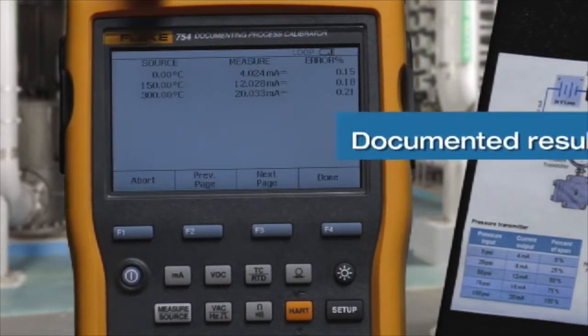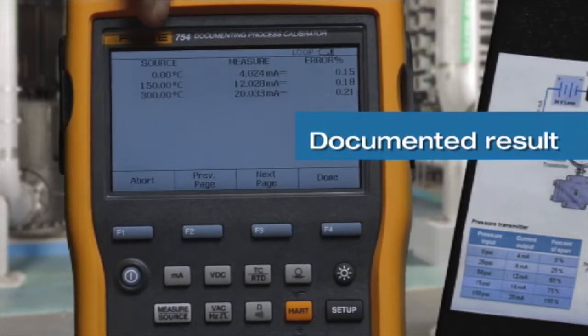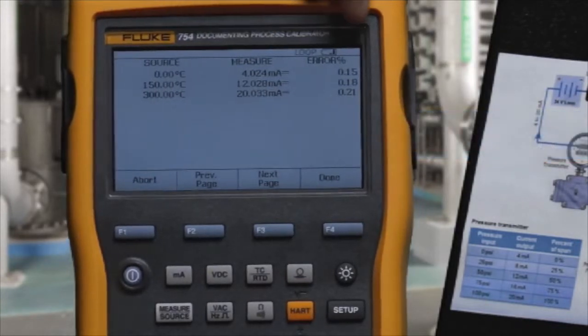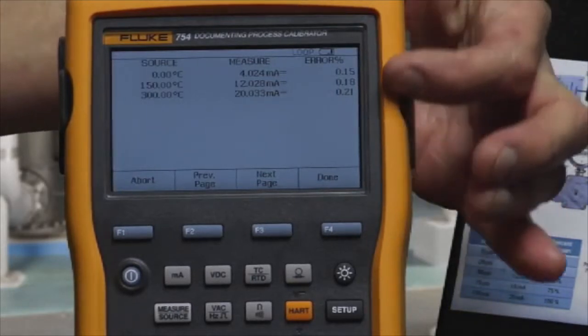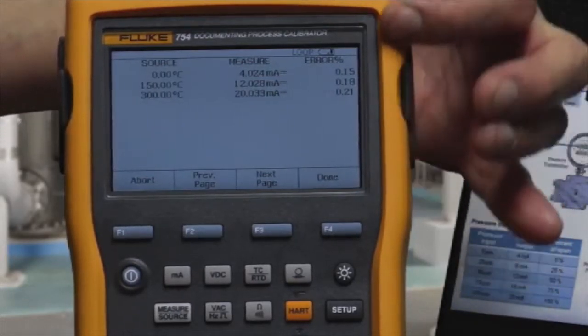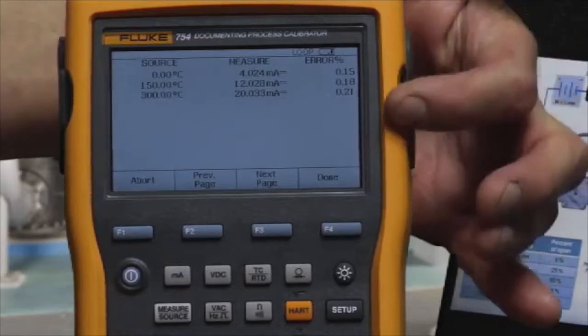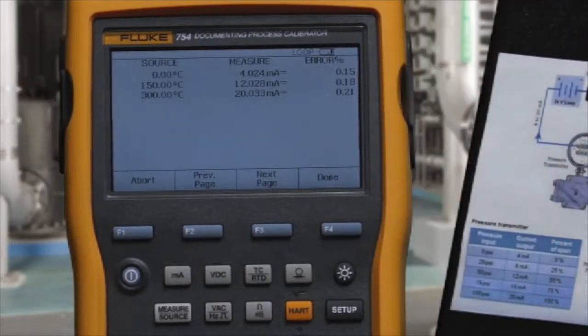When the test is done, you have the documented applied temperature, measured current, and error percent of span for each point. None of the error percents are in reverse video indicating that all the milliamp measured values are within the allowable test tolerance, and the transmitter passes the calibration test.